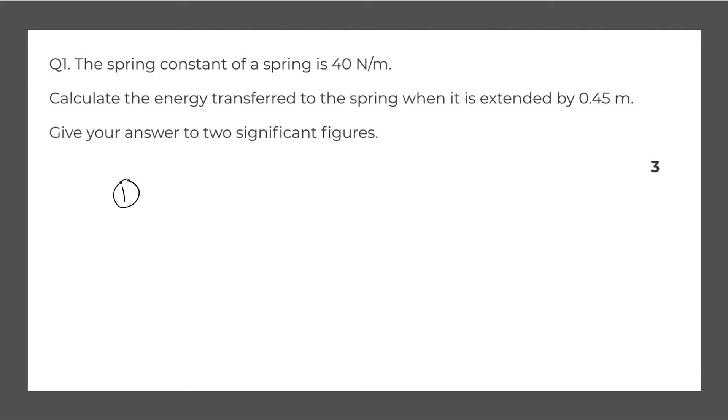First of all, you need to write out the equation. This is 0.5 multiplied by your spring constant multiplied by your change in length squared. So this is the extension squared.